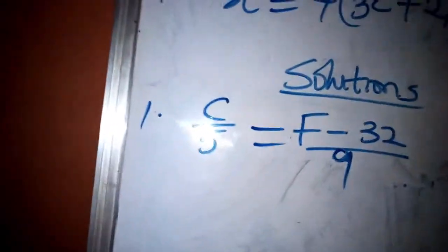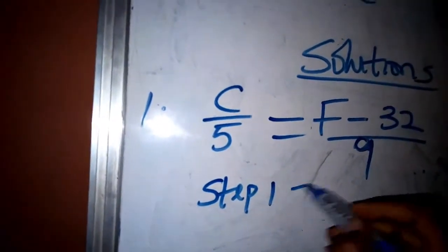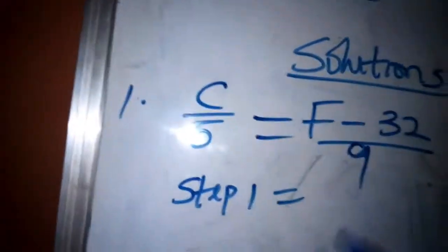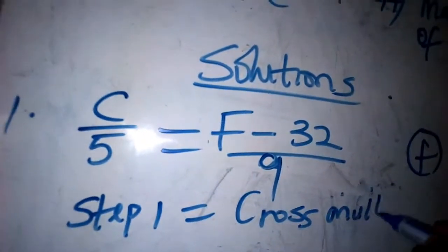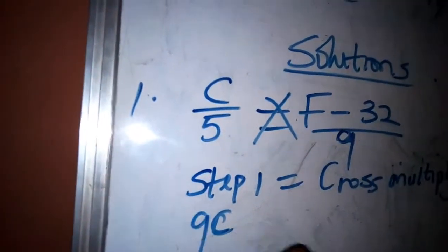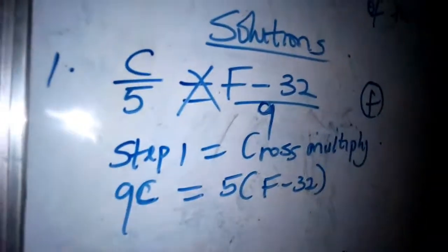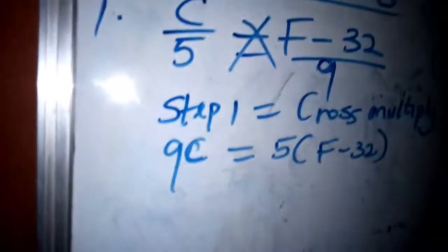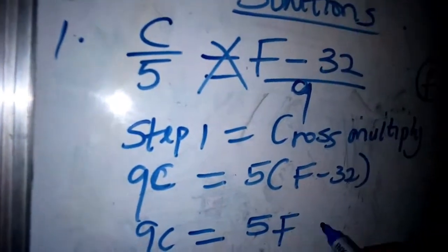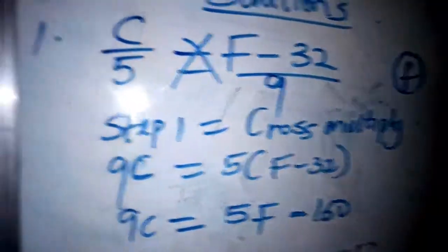Now we want to make F the subject of the formula. Step one: because we have two fractions — one fraction equals the other — we are going to cross multiply first. Cross multiplying gives us 9C equals 5(F minus 32). We open this bracket: 9C equals 5F minus 5 times 32, which is 160.